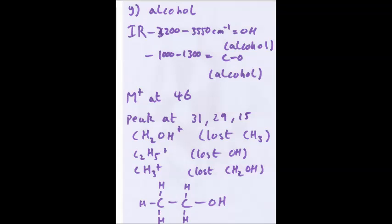46 is the mass. Now, at 31, we have lost 15, a CH3 group. At 29, we have lost 17, which is O16 plus H1. So, we've lost an OH group. So, we can guess that one side of the molecule has a CH3, the other has an OH. And at 15, we have lost 31. And that is the same as CH2OH lost. So, we've now worked out that there are two carbons and O8s, ethanol.